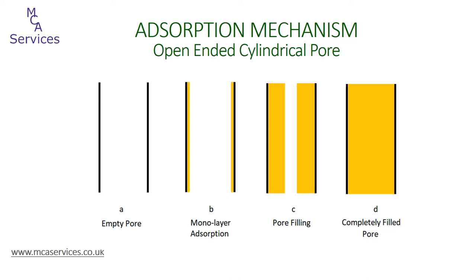We can now build on this by considering what happens with certain pore geometries, starting with the simplest: an open-ended cylindrical pore. With pore filling during adsorption, we progress from point A — an empty pore — to point B, where we have a monolayer adsorbed covering the pore walls. Through to point C, this monolayer builds up through multilayer adsorption, and we're effectively observing pore filling via capillary condensation, until we reach point D where the pore is completely filled. Capillary condensation starts once the pore already has a monolayer of adsorbed liquid covering the walls, meaning that the hemispherical radius of the meniscus RM is equal to the pore radius less the thickness of the adsorbed layer.